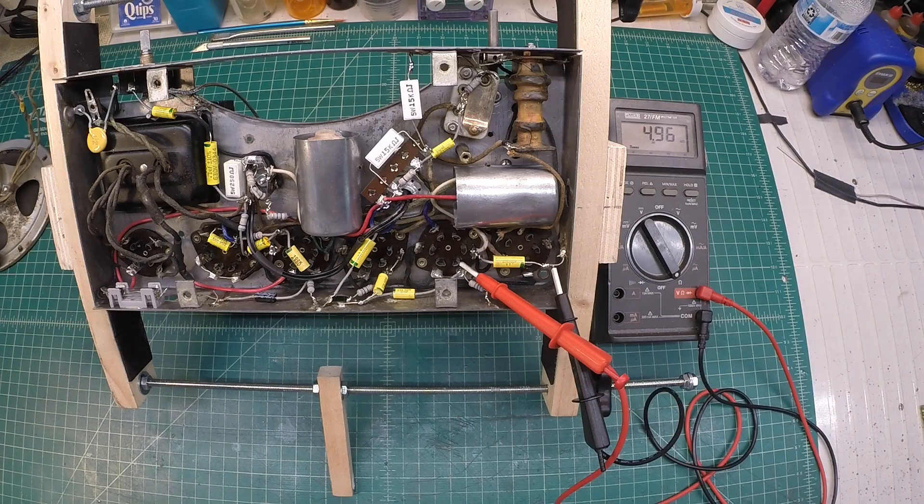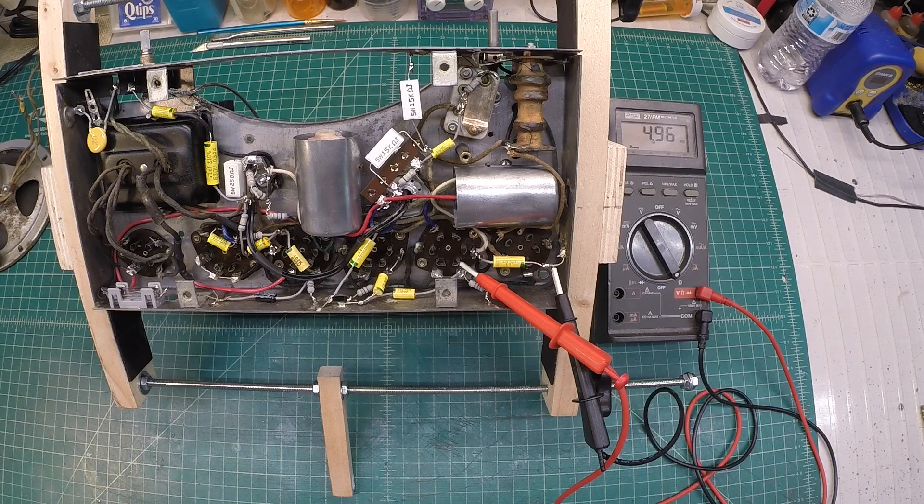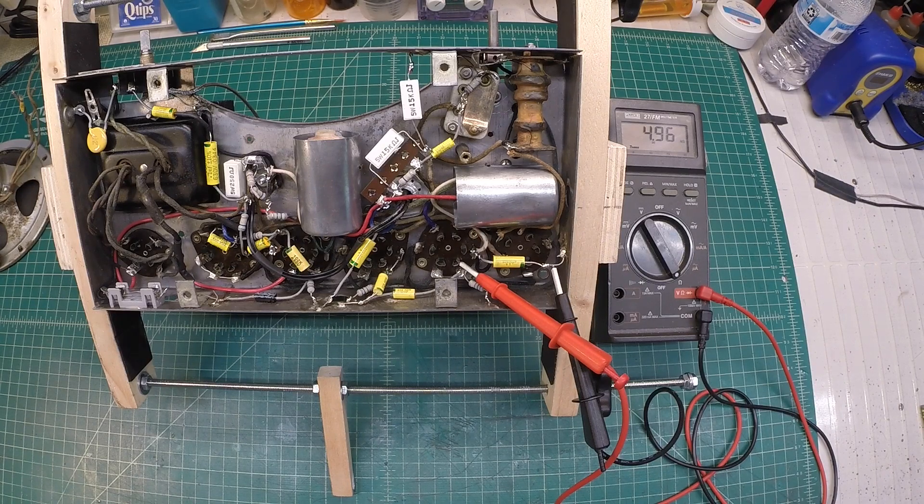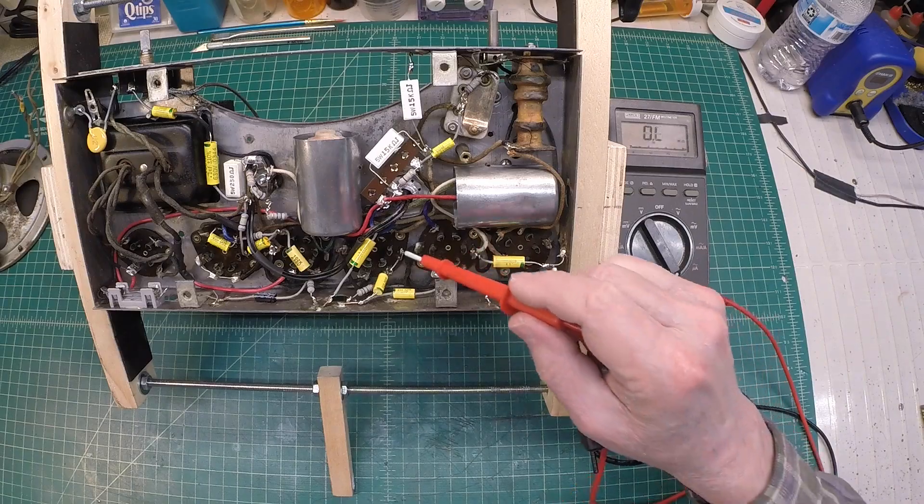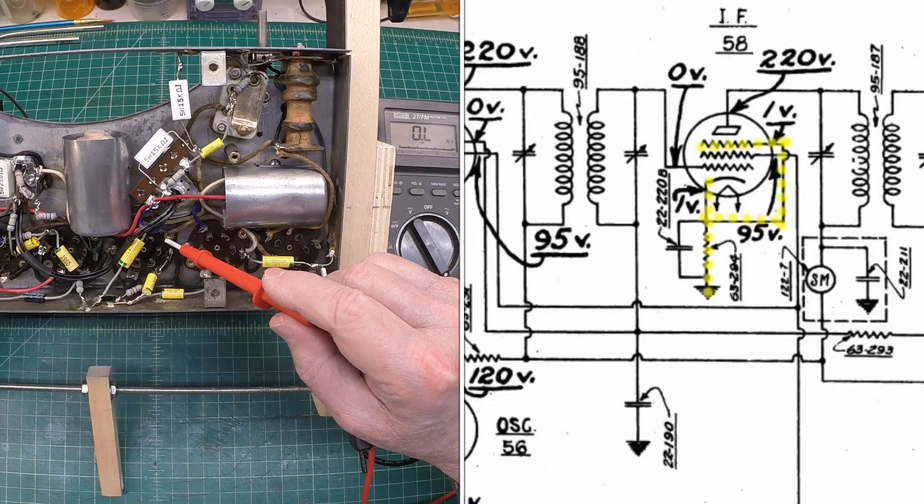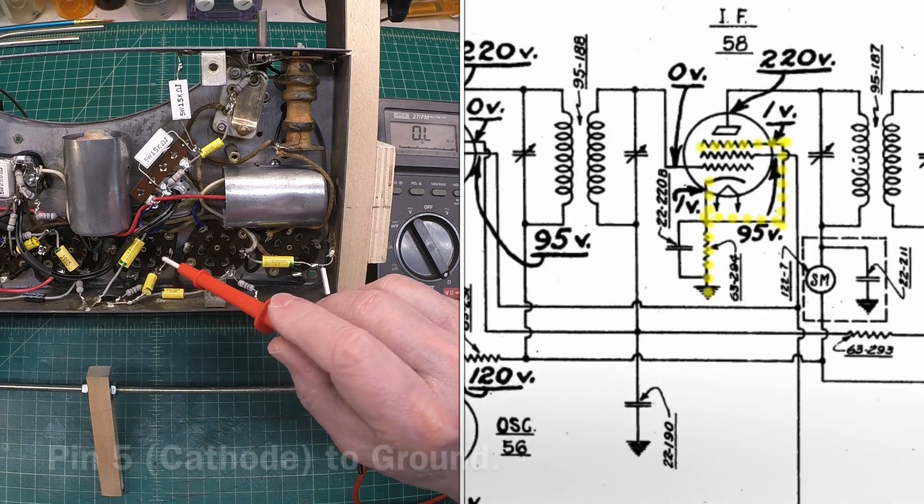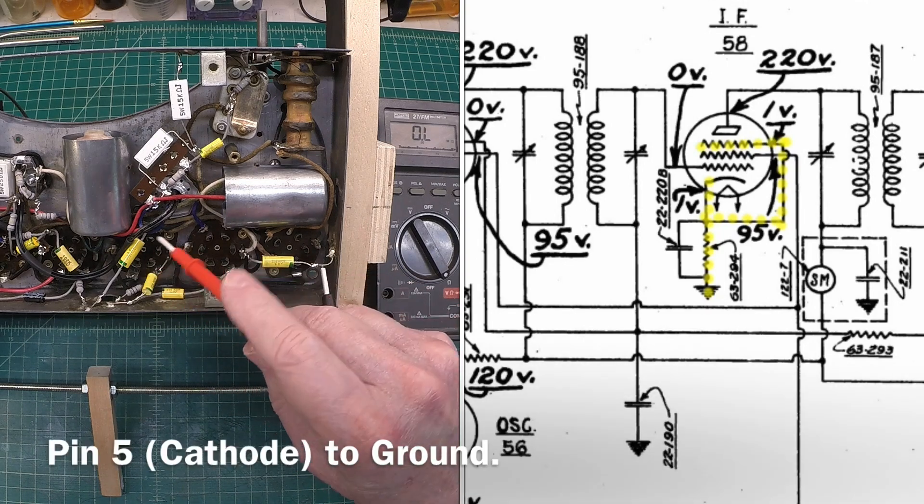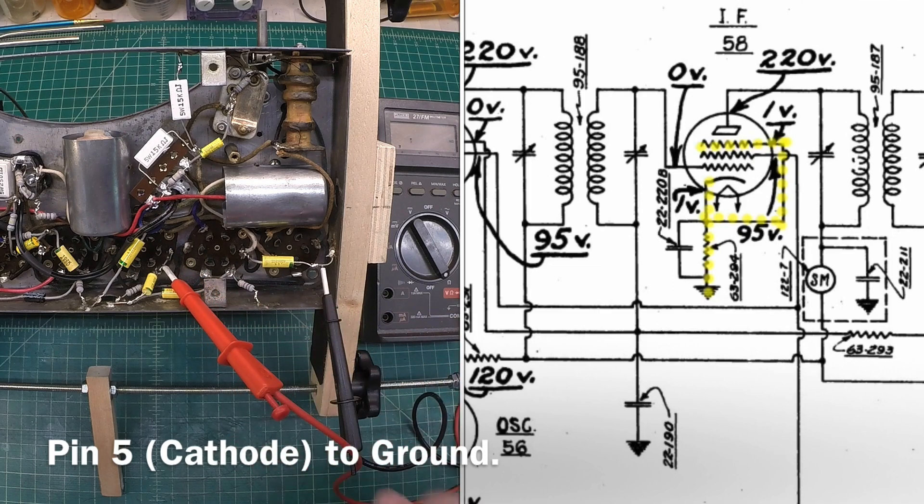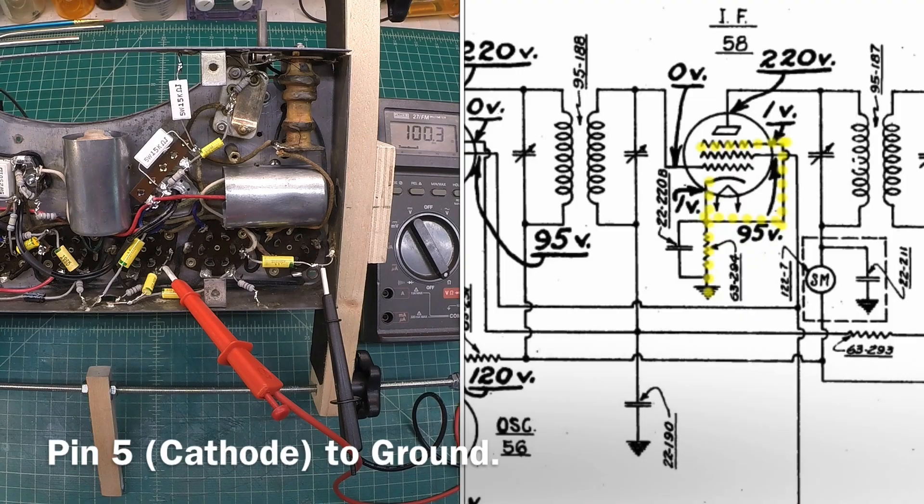Let's move along over to the 58 tube and check the cathode resistor there as well. The 58 tube resides here. You can't see that probably that pins 2, 3, 4, and 5. 4 and 5 are tied together. We can just attach here and you can see we're spot on. The part number calls this out at 100 ohms and that's what we have here.